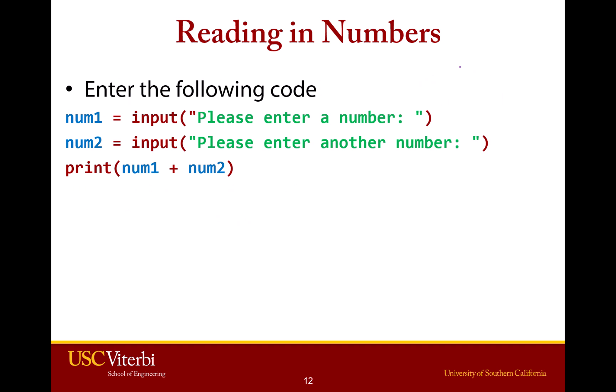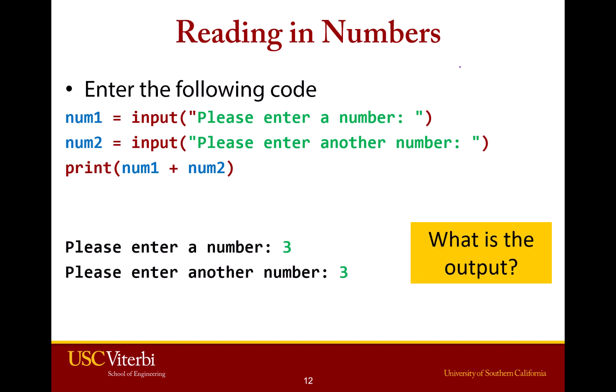Now, this is exactly what happens for strings, but let's look at what happens for numbers, because numbers are a little different. If we have num1 equals input and num2 equals input, and then we want to add them together — if the user types in 3 and 3, we would expect to get 6, but the actual output is 33. So what's happening here?